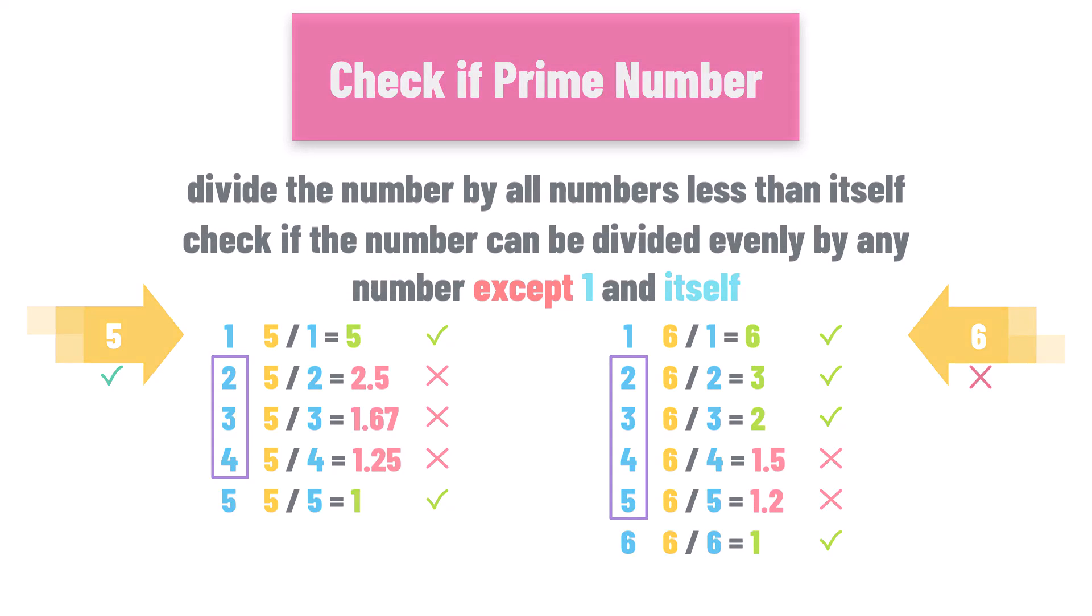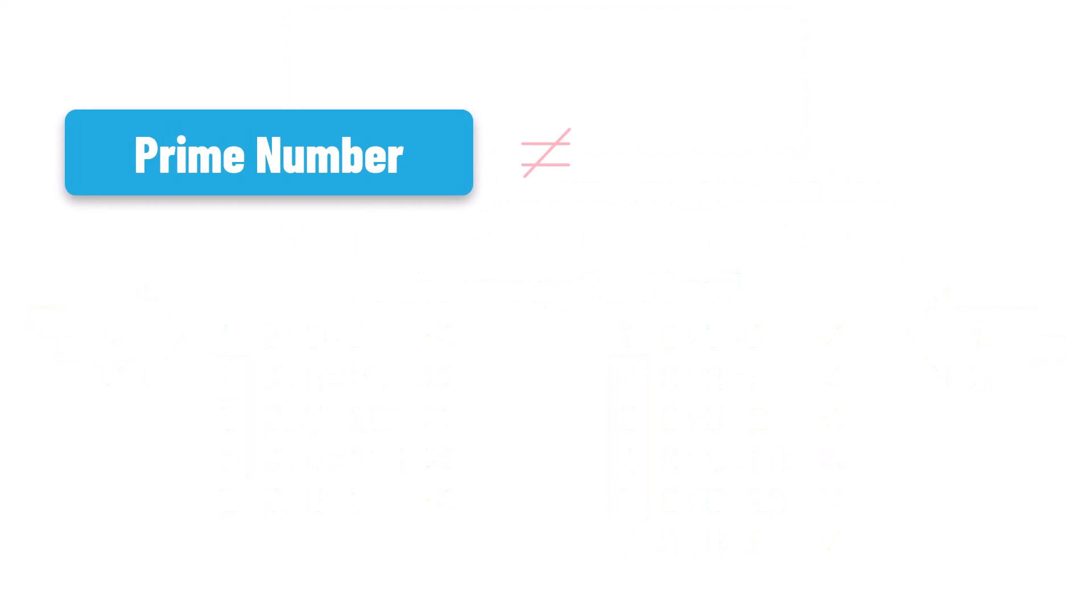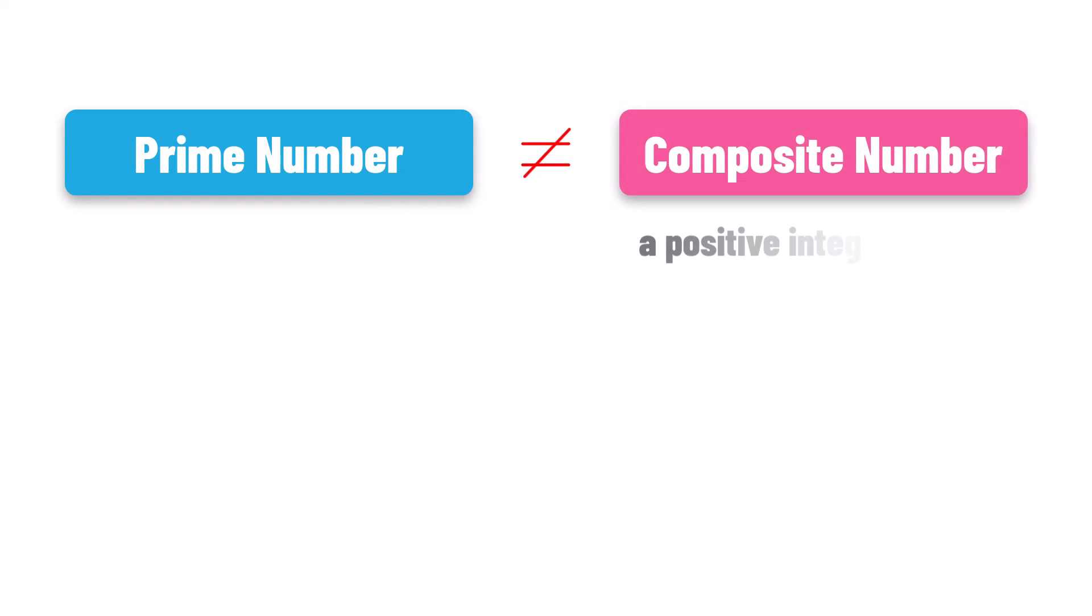One last thing is good to know. The opposite of prime number is called composite number. A composite number is a positive integer greater than 1 that is not a prime number. Or in other words, a number which is not prime is a composite number.